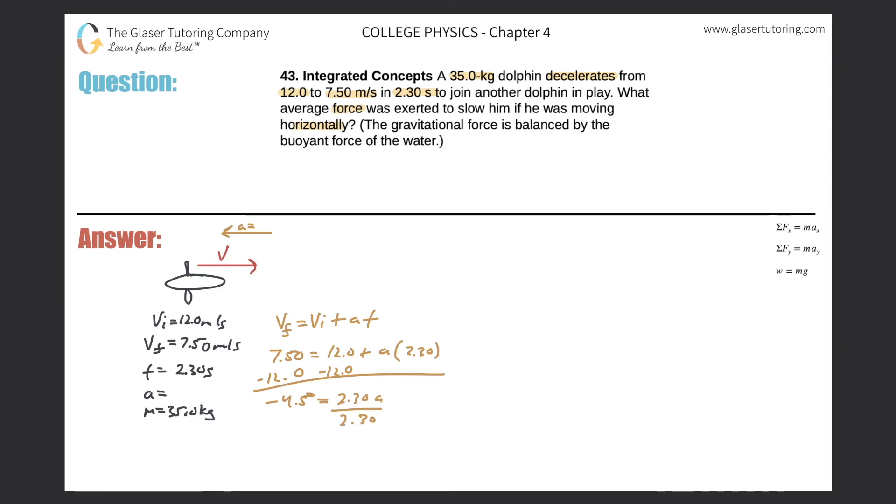Now just divide out the 2.30, and my acceleration value is—look at that, it's going to be negative—negative 4.5 divided by 2.30. We get a value of negative 1.96, and that is meters per second squared.